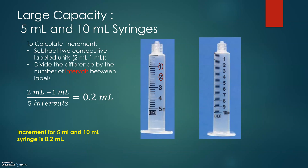Syringe of large capacity: the 5 milliliter and 10 milliliter syringe. To calculate the increment, subtract two consecutive labeled units — for example, 2 milliliters minus 1 milliliter — and divide by the number of intervals between them. So 2 minus 1 divided by 5 gives us 0.2. Please note that the increment for 5 milliliter and 10 milliliter syringes is 0.2 milliliters, larger than for small capacity syringes.